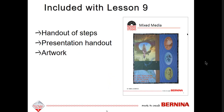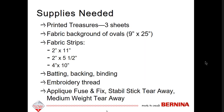Included with this lesson, you will receive a handout of the steps, the presentation handout, and the artwork necessary to create this project. If you want to gather your supplies, you're going to need three sheets of printed treasures or some other comparable product for fabric printed sheets. The fabric background for the oval pictures is 9 inches by 25 inches. You'll also need different sizes of fabric strips that coordinate with the project, batting, backing, binding, embroidery thread, applique fuse and fix for the applique frames, stable stick tearaway, and medium weight tearaway.